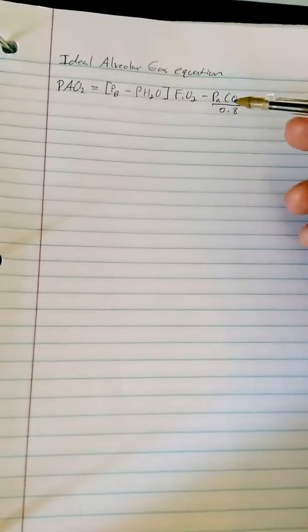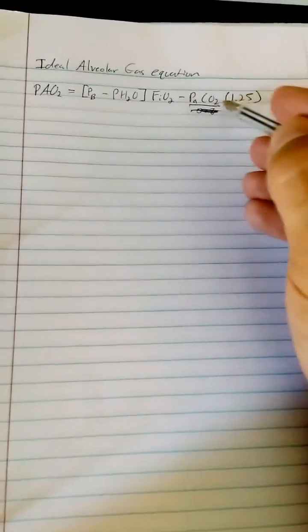If you eat more carbs or more fats, this can actually change, but for this equation it's assumed to be 0.8. Now sometimes you'll see this equation written where people will instead choose to multiply by 1.25, which is the reciprocal of dividing by 0.8. This is a little easier to do, so this is how I'm going to be doing it.